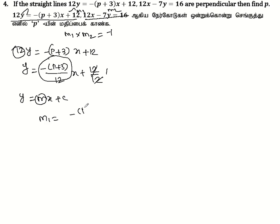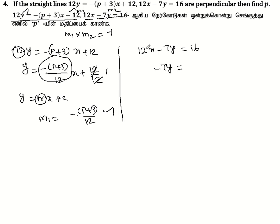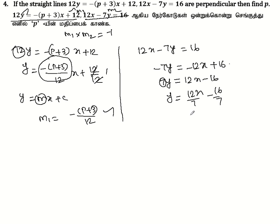For the second line, 12x minus 7y = 16. Rearranging: minus 7y = -12x + 16, so 7y = 12x minus 16.